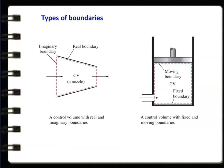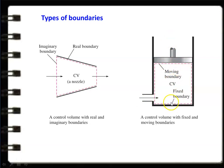The boundary may be fixed, moving, imaginary, or real. Looking at the diagram of a nozzle: the dotted line is the imaginary boundary and the steel body is the real boundary. In the piston-cylinder arrangement, the piston reciprocates inside the cylinder — the moving boundary refers to the piston face, while the cylinder walls form the fixed boundary. So boundaries may be real, imaginary, fixed, or moving.